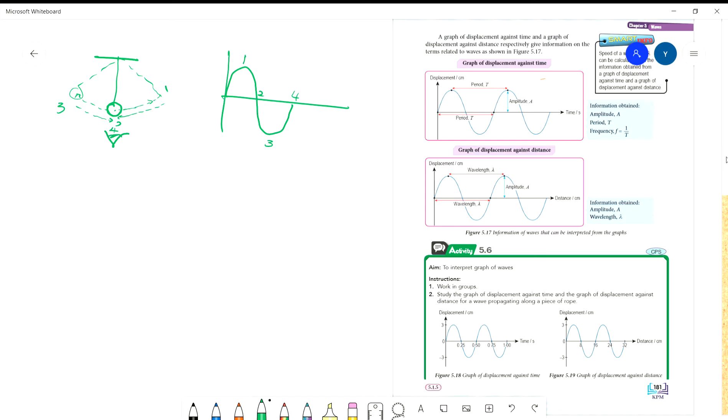The characteristic of the graph - we can analyze and discuss from one motion. We can discuss two types of graphs. First, we discuss displacement. You can see here in the textbook: displacement against time, and then the same motion, we can also analyze displacement against distance.